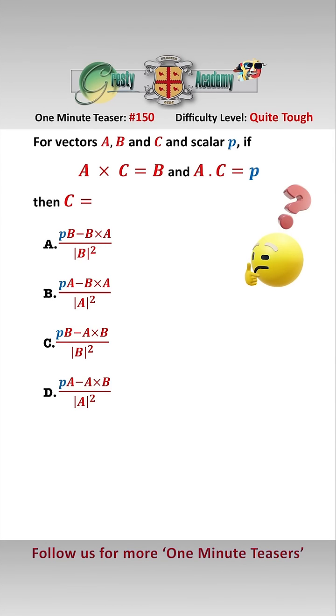This type of question where we have a cross product and a dot product is pretty common in exams, so we want to always look at this identity here. A cross B cross C equals B times A dot C minus C times A dot B, which is known as the Lagrange vector cross product identity. So let's have a look at this.